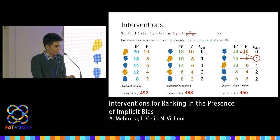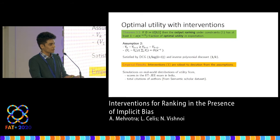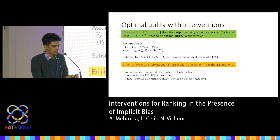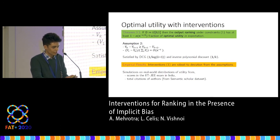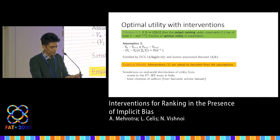In our next result, we show that for certain specific distributions, the ranking which satisfies these interventions would always get a nearly optimal fraction of the latent utility, assuming some natural assumptions on the position-based discounts which are satisfied by popular metrics such as DCG used in practice. We also empirically examine the performance of our interventions on real-world distributions of utility, and find that these interventions are robust to deviations from our assumptions.